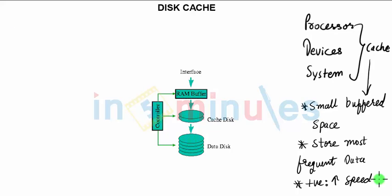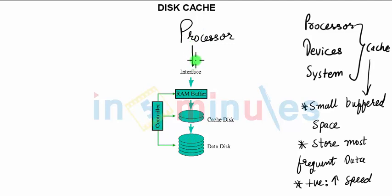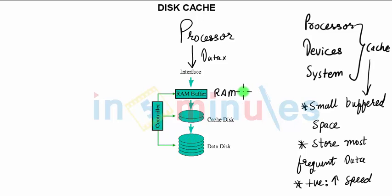When you talk about disk cache, what happens is: your processor communicates through the interface, with RAM acting as the buffer. The processor requests data x. RAM would first search for data x in itself, but if data x is not available, we technically call that a cache miss.